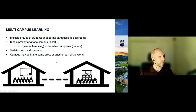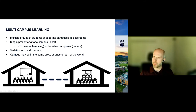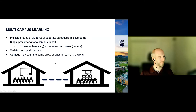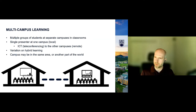And finally, multi-campus learning: multiple groups of students at separate campuses in classrooms. A standard lecturing scenario at one location uses ICT or teleconferencing to connect another campus remotely. We have a professor at one location with one cohort, and one or more additional cohorts at their own campuses attending simultaneously. This can happen in the same area or another part of the world — there are even case studies of students in Africa taking multi-campus courses from professors in India.